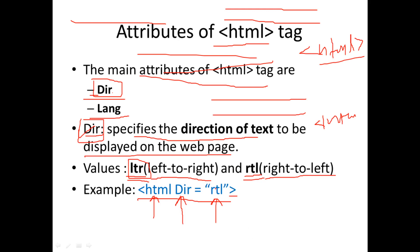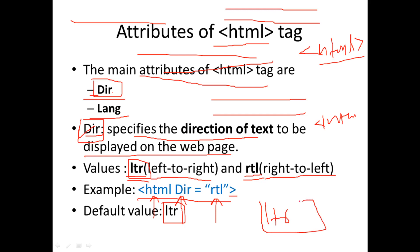RTL can be written using double quotes. The default value is ltr. So the dir attribute specifies the direction — left to right — and the attribute value ltr is the default, while rtl is the other value. That is the dir attribute of the HTML tag. Now the next attribute is the lang attribute.